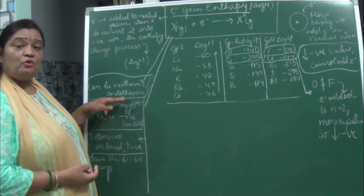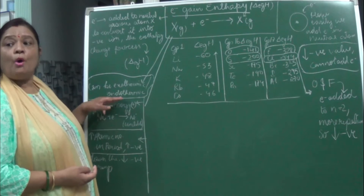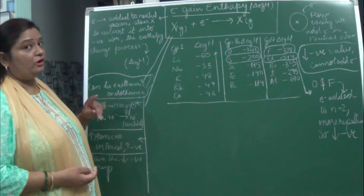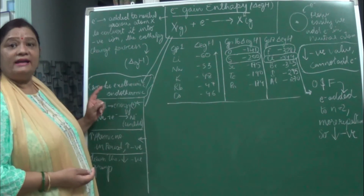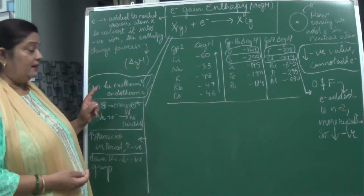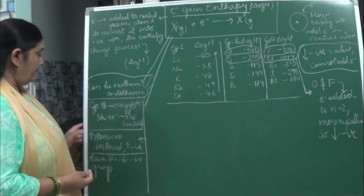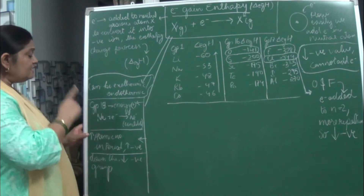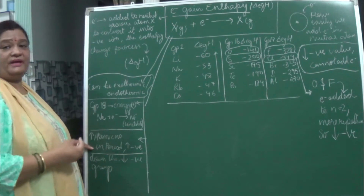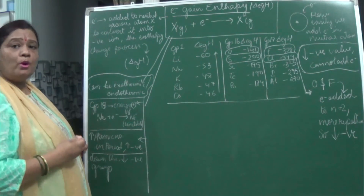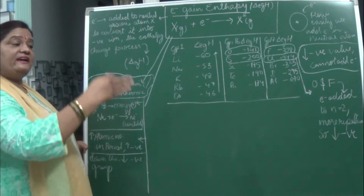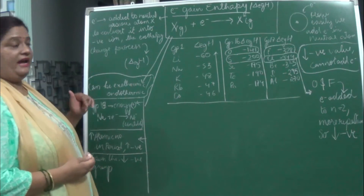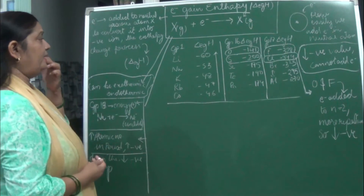So for neon, the electron gain enthalpy value will be positive in nature, not negative, because the process is endothermic. In general, more the atomic number across a period, more negative the value of electron gain enthalpy.